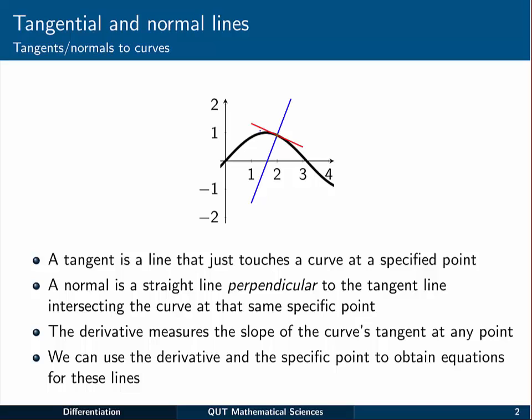A normal line is, as you might expect, one which is normal or perpendicular to the tangent line, intersecting the curve at the same point, kind of like the blue line here. So the tangent scrapes along the curve and the normal is perpendicular to that line.